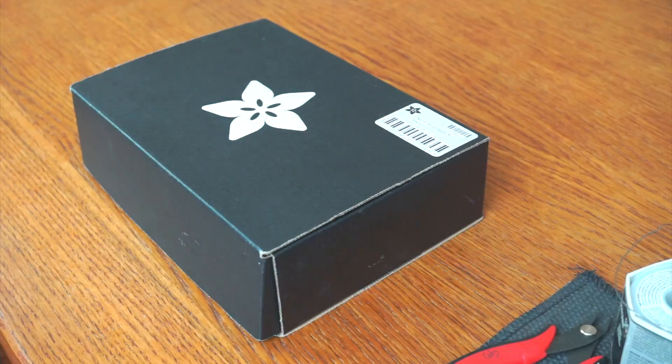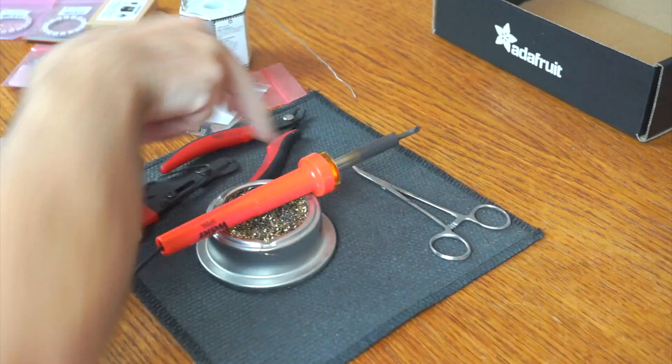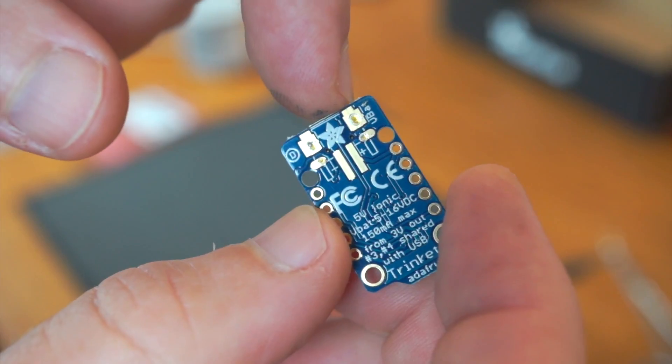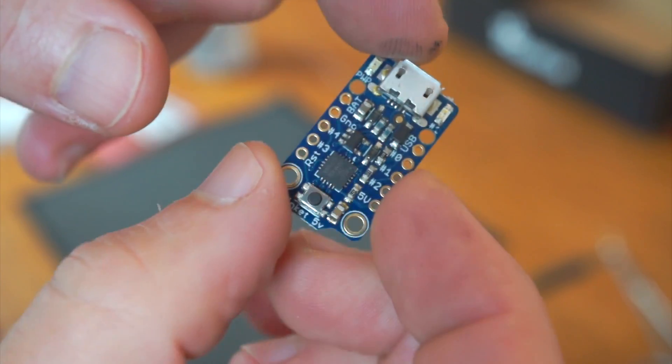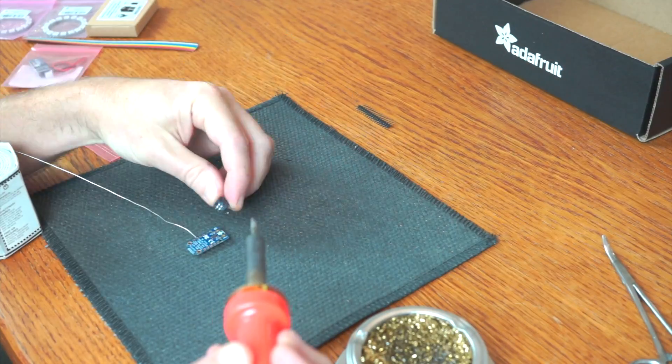In the box, you're going to get the goggles, two NeoPixel rings, the Trinket, which is like an Arduino-type board from Adafruit, and a JST connector that's going to connect the included battery pack to the board, and that's the first thing you're going to wire up.